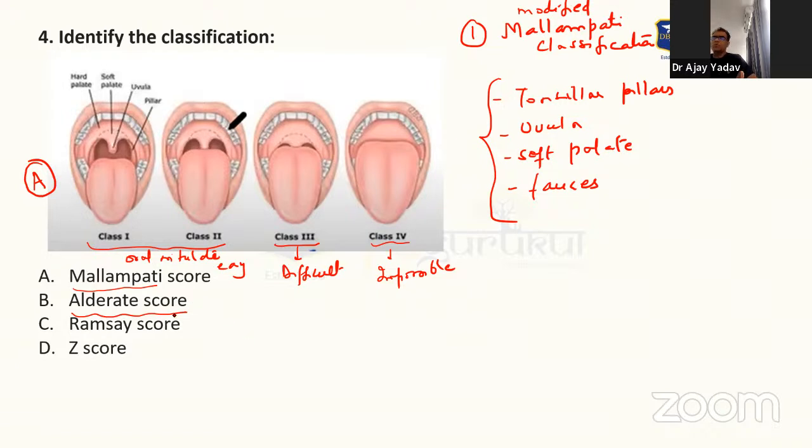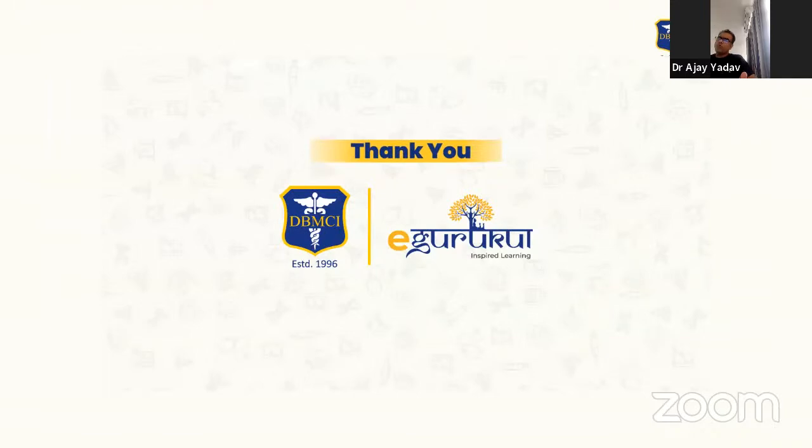And Aldrete score is used for post-operative recovery. I don't know the other choices are correct or not. Ramsay score is for ICU sedation and Z score, you know, is for osteoporosis. So these are the only questions which I could manage to find.